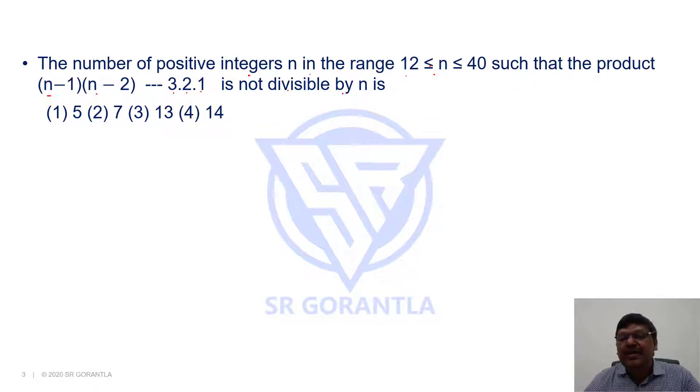The product (n-1)(n-2)...3·2·1 is not divisible by n. Here the product (n-1)(n-2)...3·2·1 is nothing but (n-1) factorial. 1·2·3 up to (n-1) means (n-1) factorial.